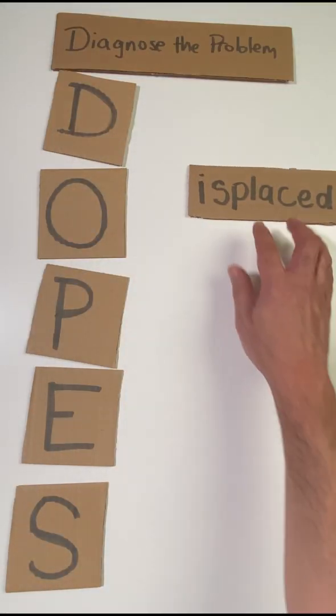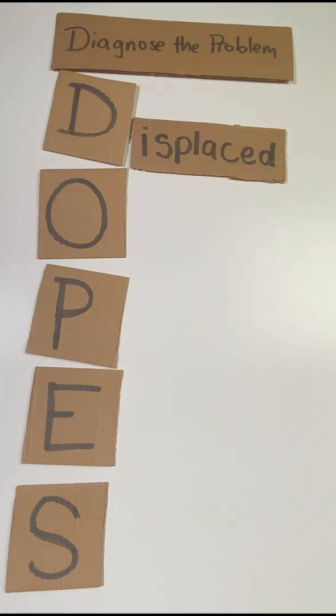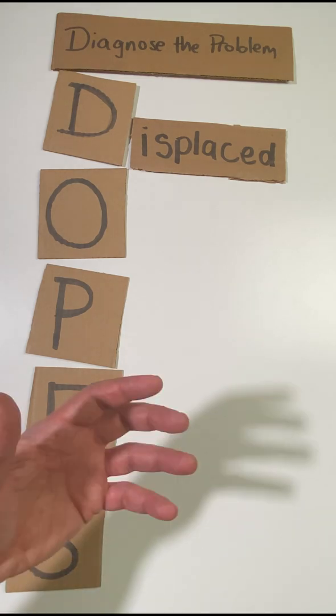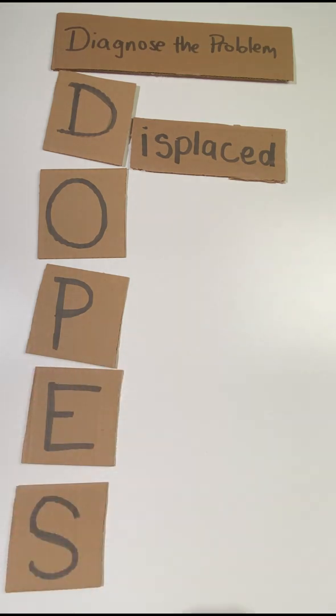The first letter is D and it stands for a displaced endotracheal tube or displaced ET tube cuff. You have to consider whether or not that tube has migrated above the cords and whether or not that's the reason why your patient is crashing. They're not getting oxygenated. They're not getting ventilated very well.